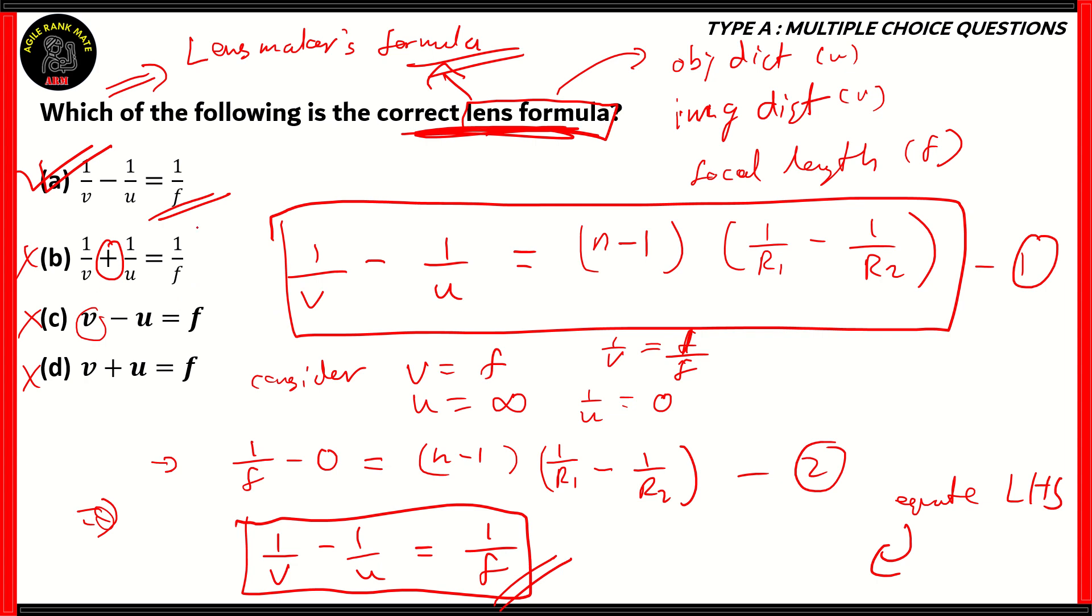So, therefore, the correct answer for this question is option A, and the best way to derive it is by using the lens maker's formula, which is 1/V - 1/U = (N-1) times (1/R1 - 1/R2). Now, all you have to do is substitute V with F, and then the object distance we know to be infinity. So, therefore, in this scenario, it'll be 1/F equals the RHS. You just have to equate the two left-hand sides, and you get the lens formula.